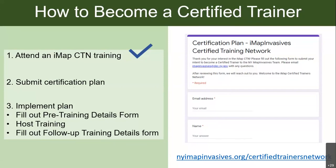Step three is to implement the plan — actually do the trainings. Once you've done your first training, you're a certified trainer. To do trainings and keep track of certifications, we need you to fill out two forms: a pre-training form and a post-training follow-up form. The pre-training form has a couple of details like date and audience. The follow-up form has information you'll only know after the training, like how many people attended. I promise they're all very short — I put on trainings all the time and fill them all out, and I made sure it's just the information we need.